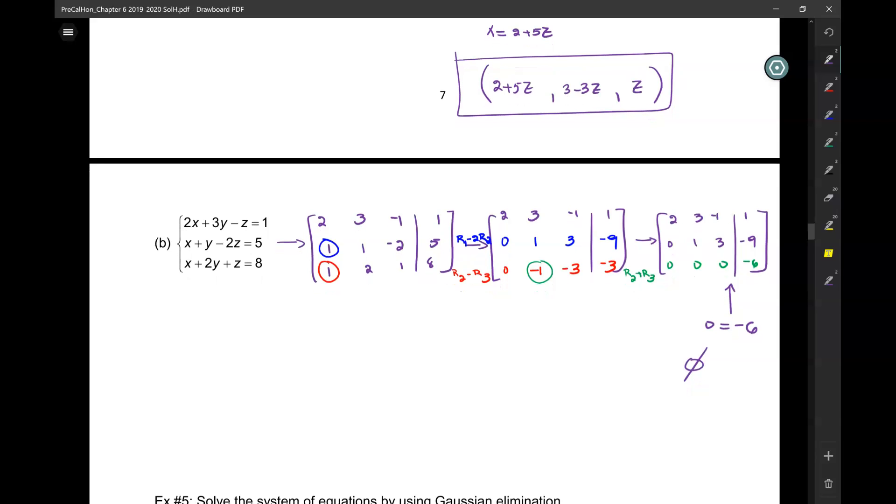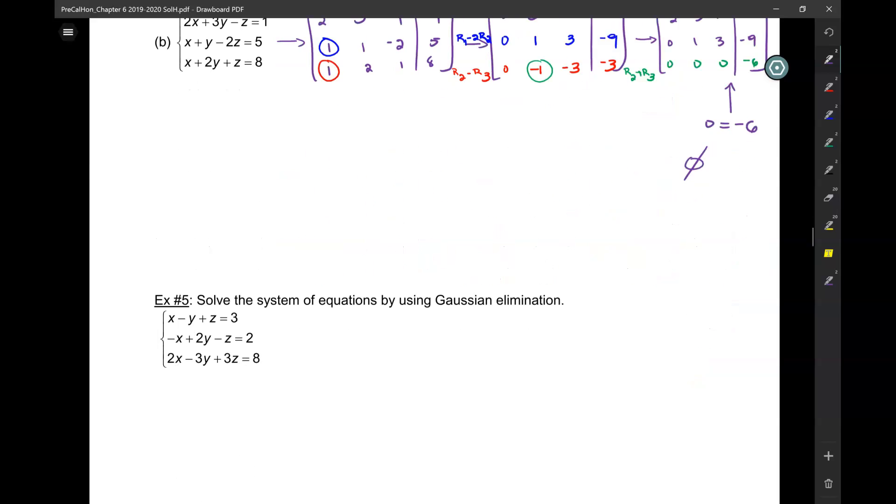Do you see how you get no solution? Could we have known from here? We kind of could have known from here. Because if I divide that second to last step by negative 1, in the blue I have 1, 3, negative 9. In the red I have 1, 3, 3. So, x plus 3y equals 9 on one hand or negative 3 on the other hand. And from there I could have known already. Okay?